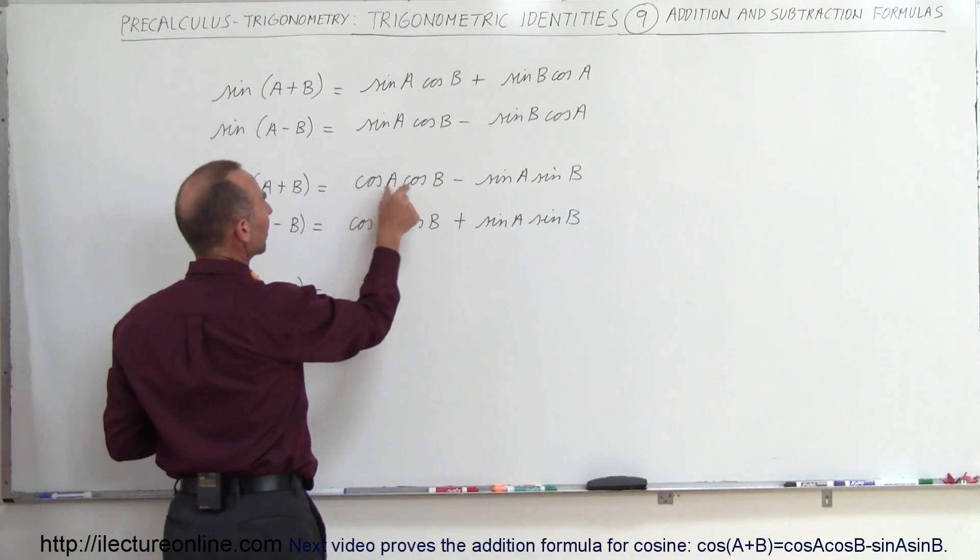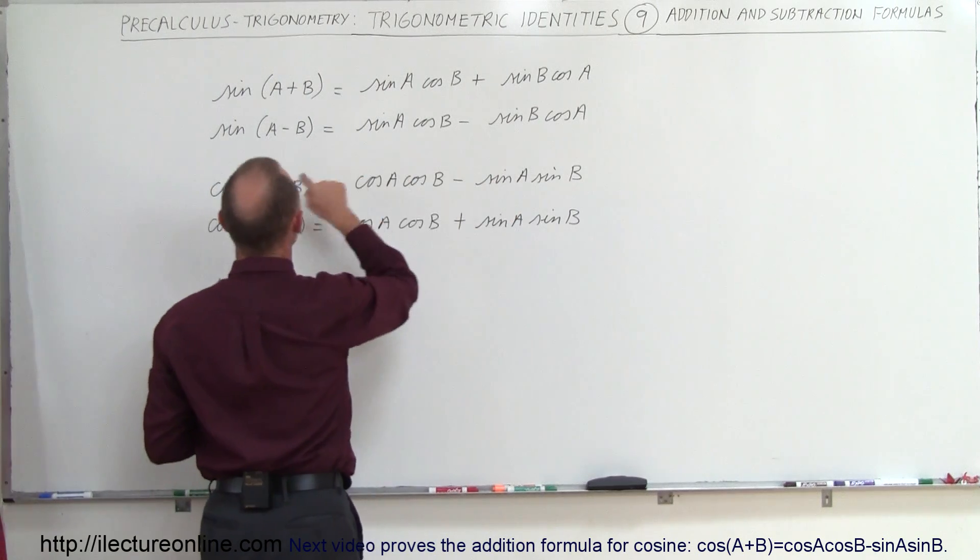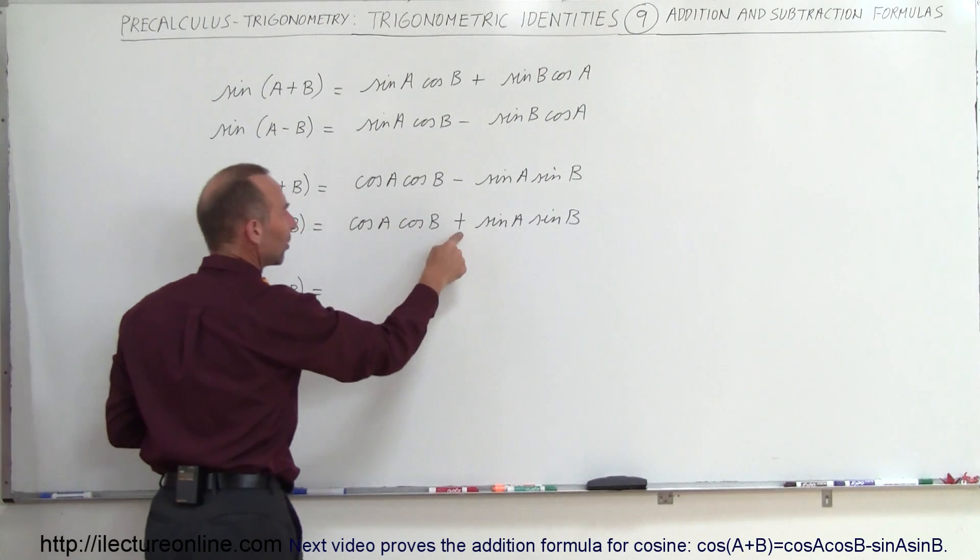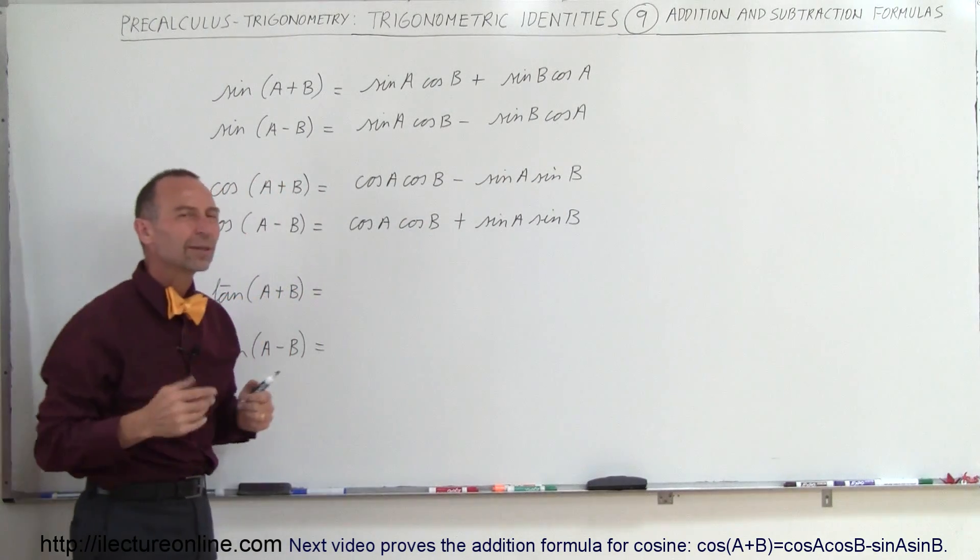On the cosine it's cosine times cosine, sine times sine. When you have plus here, there's a minus here. When you have a minus here, there's a plus there. So that's how you can memorize those.